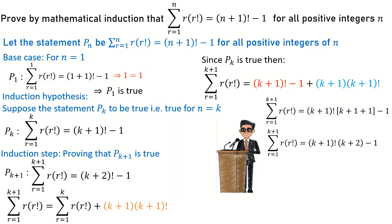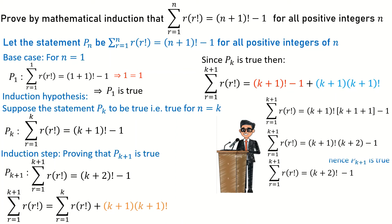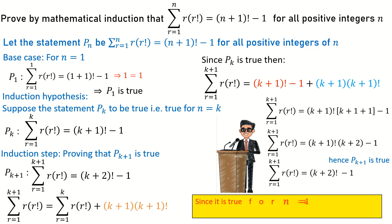From there I simplify: k plus one plus one is k plus two, and I can identify that k plus one factorial times k plus two is the same as k plus two factorial. Hence it is true for n equal to k plus one, so the statement P(k+1) is true.